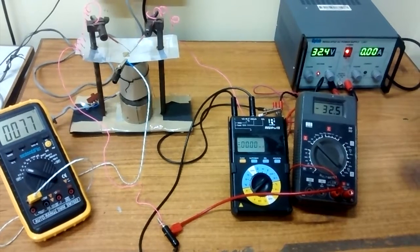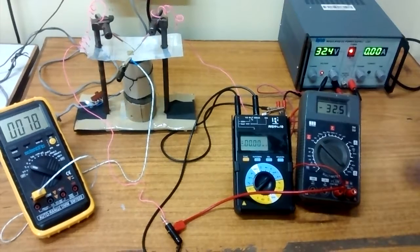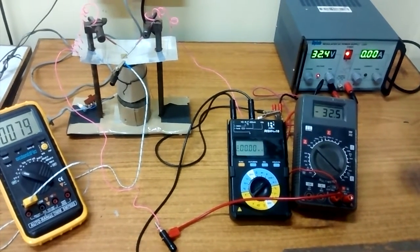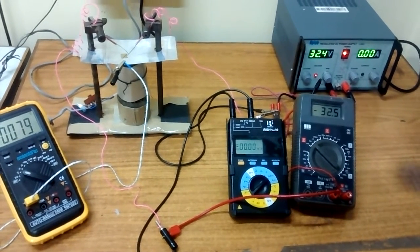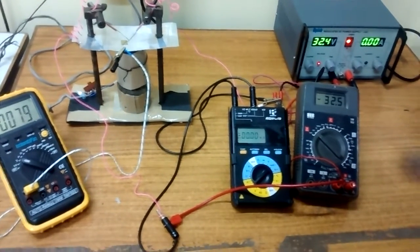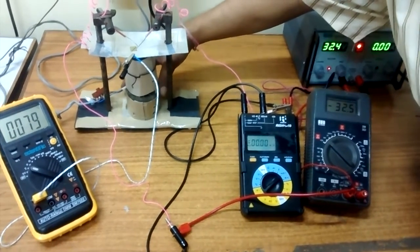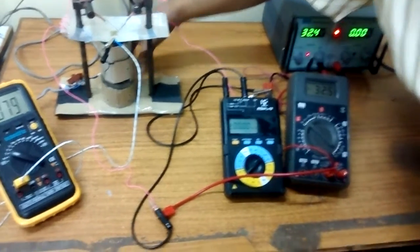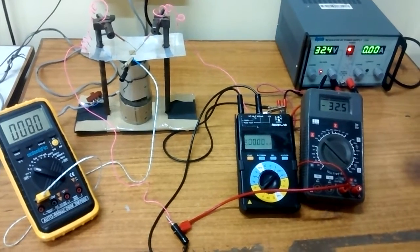Now 77 degree centigrade temperature, no current flow. Temperature is 79, no current flow. Temperature is 79, no current flow.